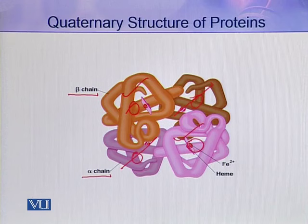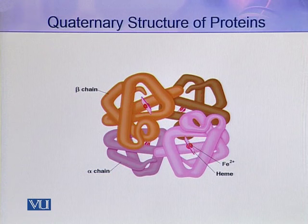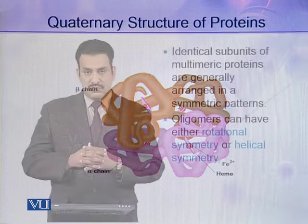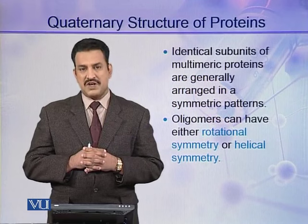Some scientists say that if two or more subunits are identical, those identical subunits are regarded as a single protomer. In that case, hemoglobin can be called a dimer. This is at its quaternary level of organization. Identical subunits of multimeric proteins are generally arranged in a symmetric pattern.